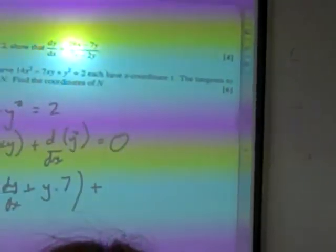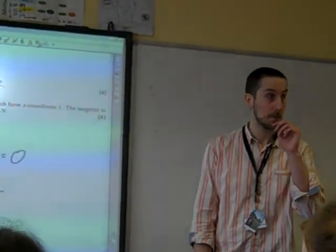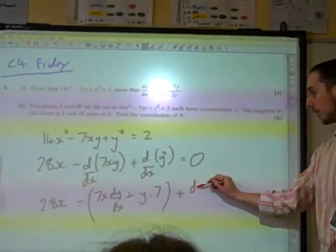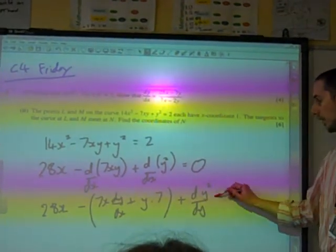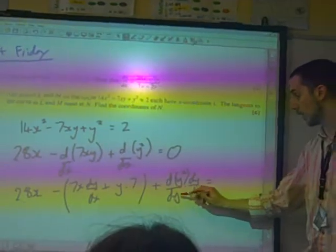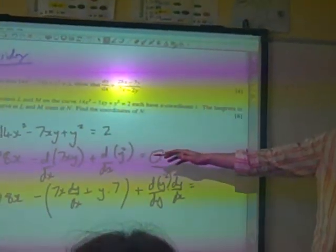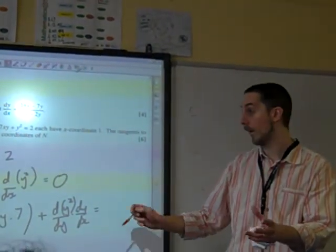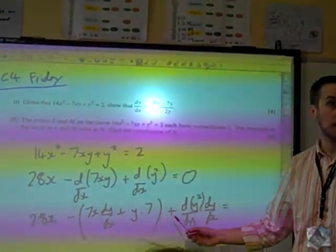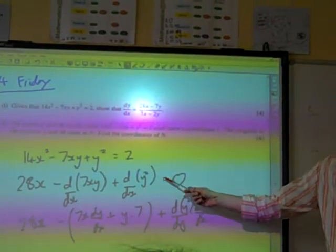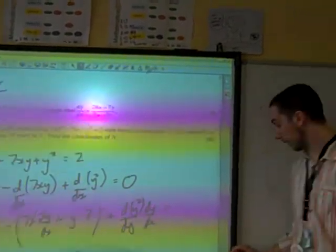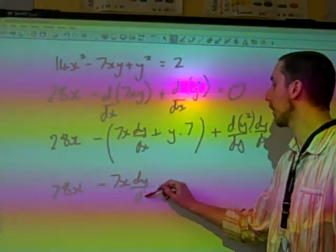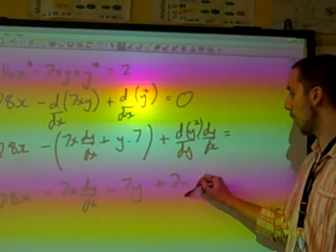How do we differentiate with respect to X, Y squared? You chain rule. You differentiate Y squared with respect to Y, times dy/dx. So we've got 28X minus 7X dy/dx minus 7Y plus 2Y dy/dx.